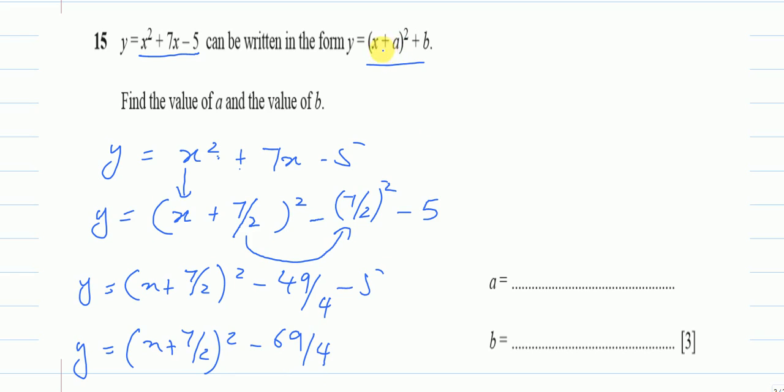Now you can see it is in this format. The number inside the bracket, a, for me is 7 over 2 or 3.5. The number outside the bracket, b, for me is negative 69 over 4 or negative 17.25. It is up to you. Thanks for watching.